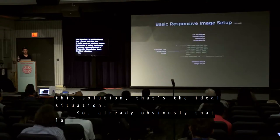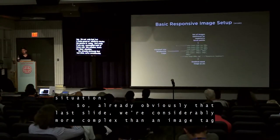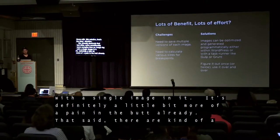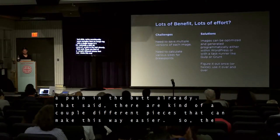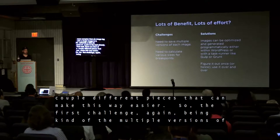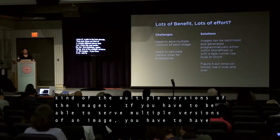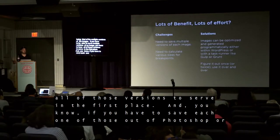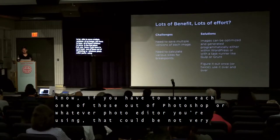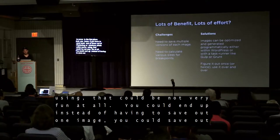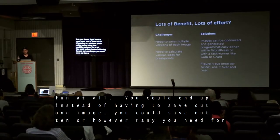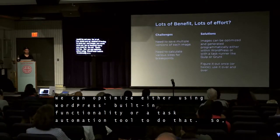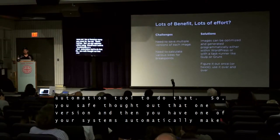That last slide was already considerably more complex than an image tag with a single image in it — it's definitely a bit more of a pain. There are a couple of different pieces that can make this way easier. The first challenge is the multiple versions of images. If you have to serve multiple versions, you have to have all of those versions to start with. If you save each one out of Photoshop, that could be not very fun — instead of saving out one image, you could end up saving out ten or however many you need. But we can optimize those programmatically either using WordPress's built-in functionality, or a task automation tool like Gulp or Grunt. You save out that one version and then one of your systems automatically makes all the other versions for you.